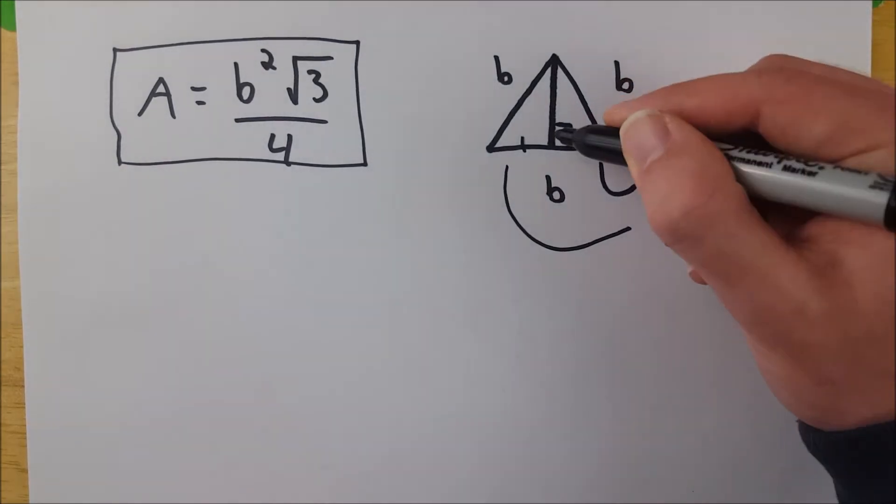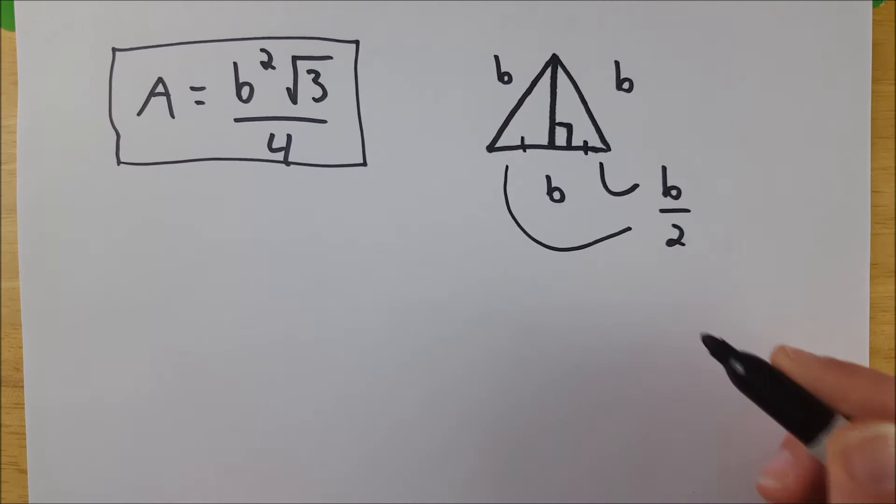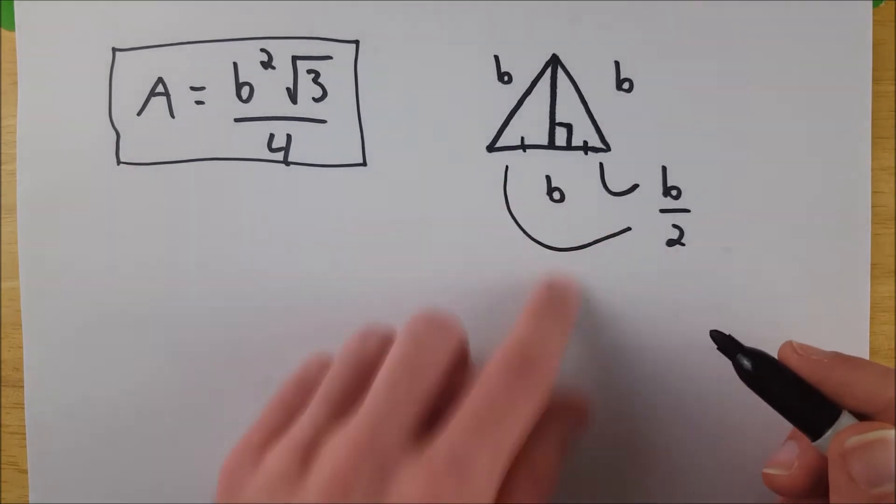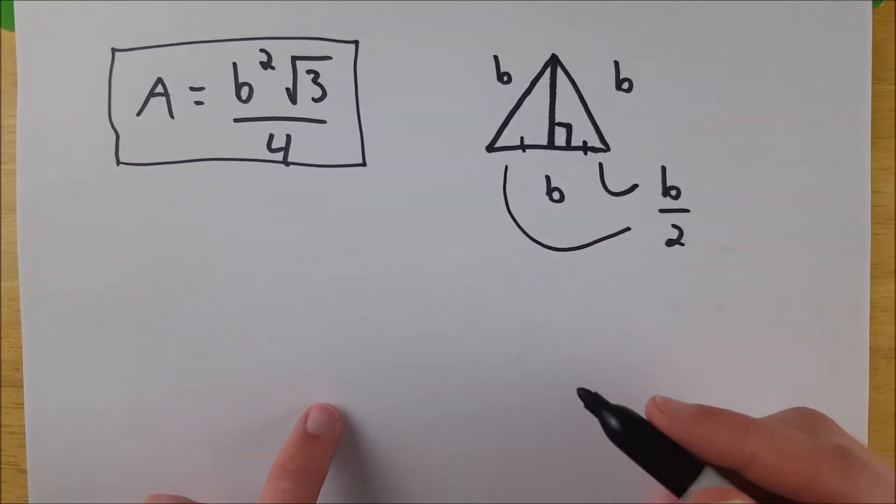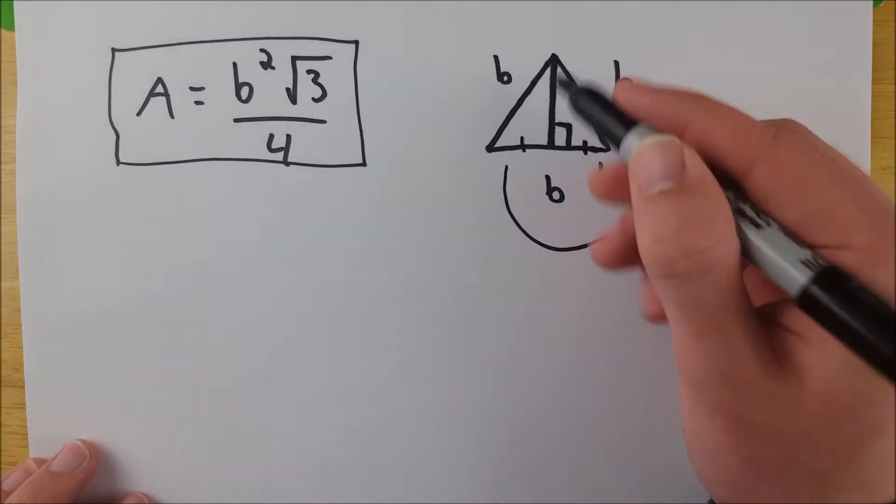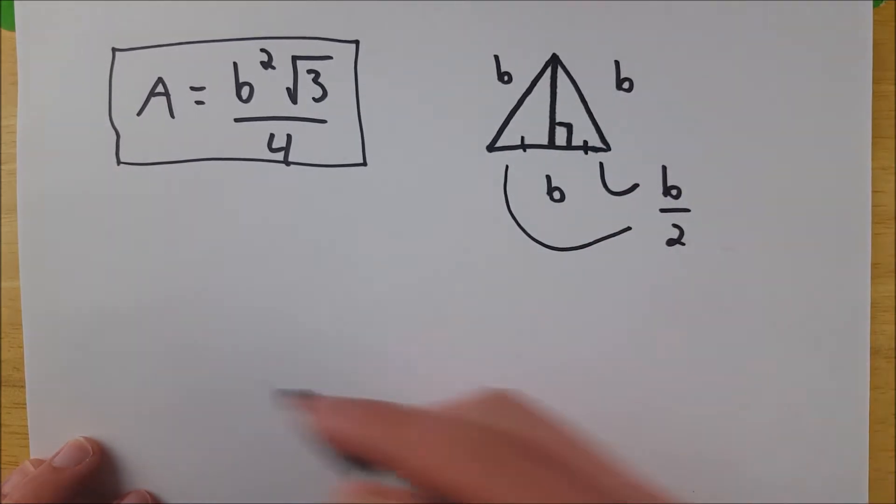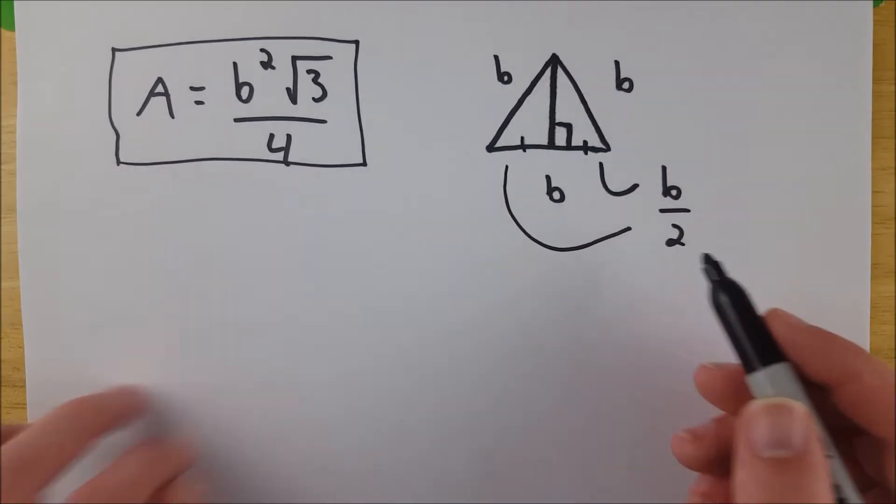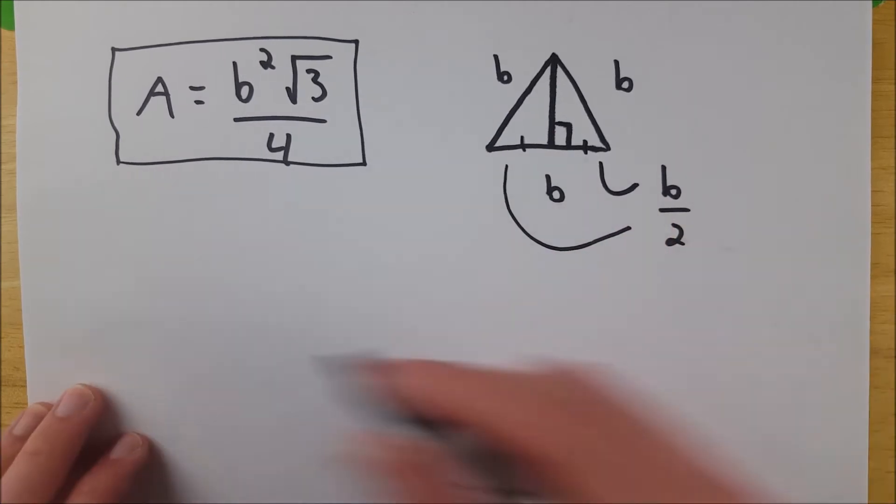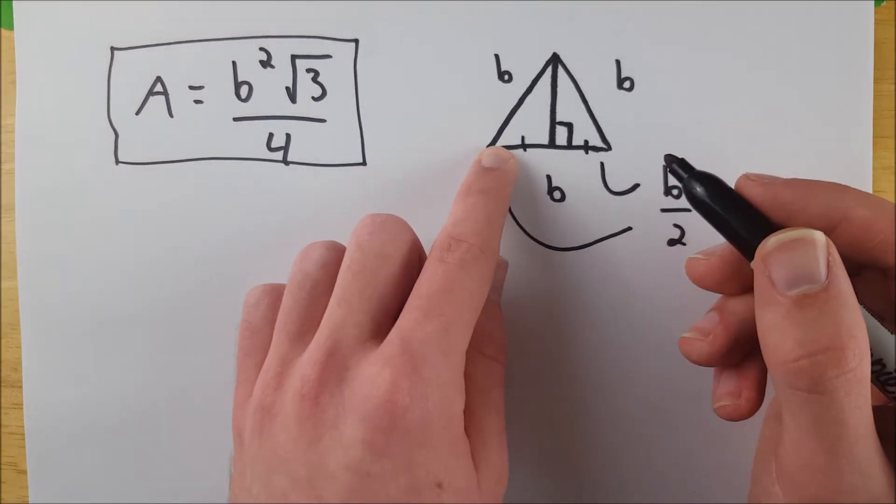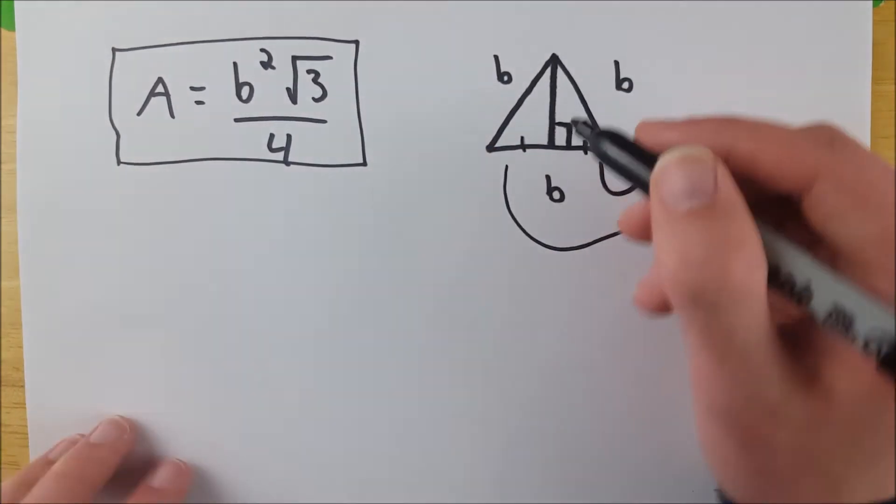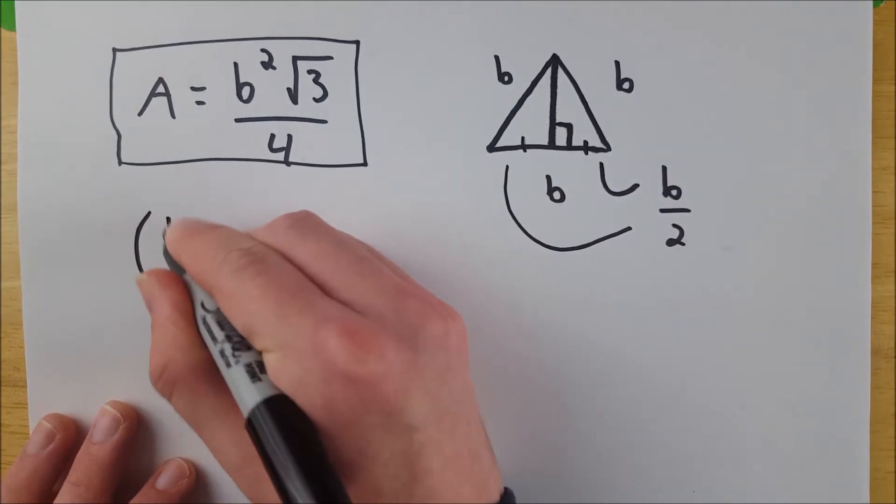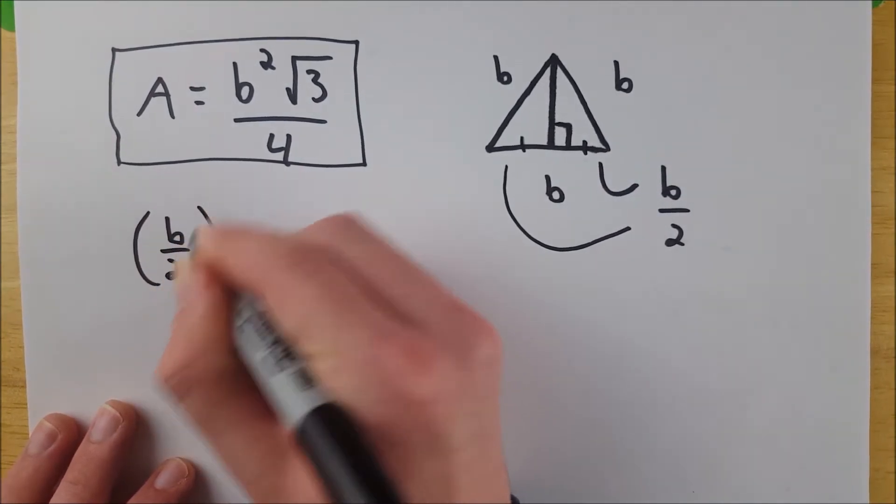So now using the Pythagorean theorem, we can find the height of our big triangle in order to determine its area by our standard area formula. So what is the height of our original triangle? Well, we got to solve the Pythagorean theorem. So we have b divided by 2 all squared, because that is the length of one of the legs of our right triangle. So write that over here. We've got b divided by 2 squared.